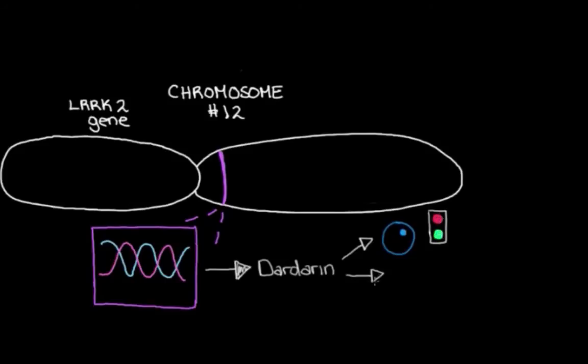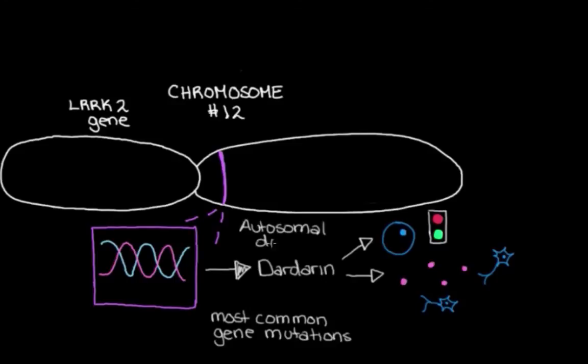And Dardarin helps us do things like turn our cells on and off so that we can control their activity and send signals around the brain so that different cells can talk to each other. And what's really interesting is LRRK2 mutations are actually the most common gene mutation that is associated with Parkinson's disease. So this is the gene that we normally see issues with in people that have a genetic form of the disease. And with this particular gene, people only need to get one mutated copy from either of their parents rather than both.